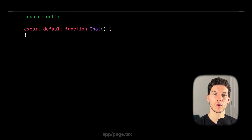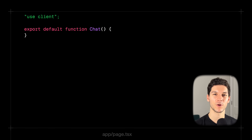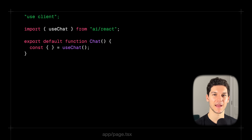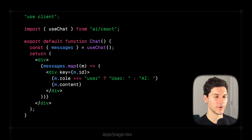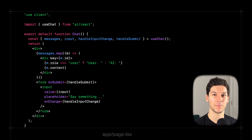Now let's create our page. We add the use client directive because we're using hooks and interactivity. We import the useChat hook from AI/react and destructure messages to iterate over them in the UI. We also destructure input, handleInputChange, and handleSubmit, which manage everything we need to interact with our API route. Let's run the dev server, head to the browser, and see what we got.